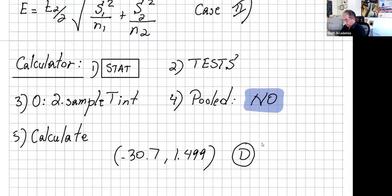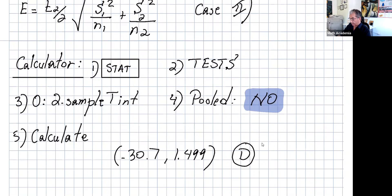The closest answer is D, so D is correct. Please review this recording a couple of times — estimating the difference of two population proportions and the difference of two population means is pretty straightforward. The formulas are important, but using the calculator is beneficial. Make sure you know the formulas and use them for a couple of problems so you understand both the formula and the calculator. That's it for this lecture — have a good one everyone!